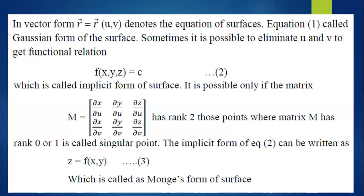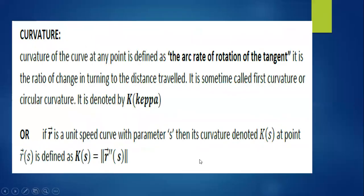Points where the matrix M has rank 0 or 1 are called singular points. Recall that the rank of a matrix is the number of non-zero rows in its echelon form. The implicit form equation can also be written as z = f(x, y), or x = f(y, z), or y = f(x, z), called the explicit form of the surface.